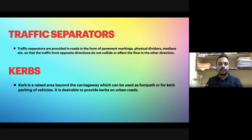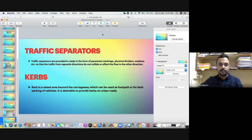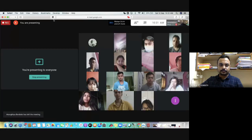A curb is a raised area beyond the carriageway, constructed on urban roads, used as a footpath or for parking of vehicles. This is all for today. In the next class we will be discussing sight distances — stopping sight distance — and in subsequent classes, overtaking sight distance.